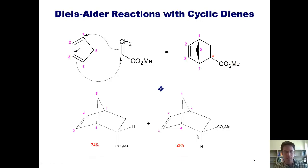And just so you know, the product at left is called the endo product, and the one at right is called the exo product.